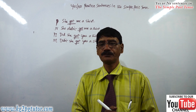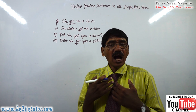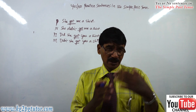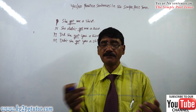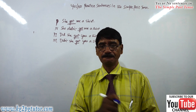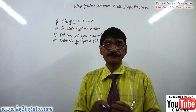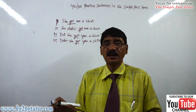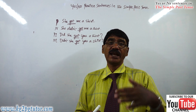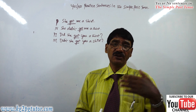Nineteenth one: 'I invited them. I didn't invite them. Did you invite them? Didn't you invite them?' Twentieth one: 'It rained here. It didn't rain here. Did it rain there? Didn't it rain there?'